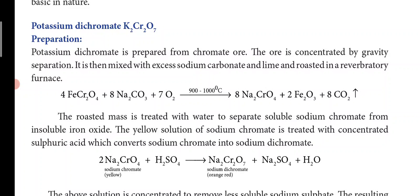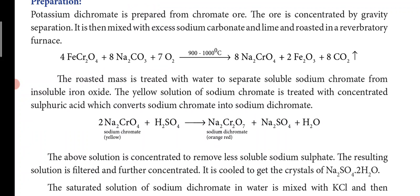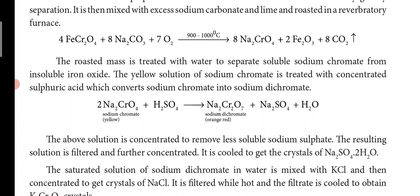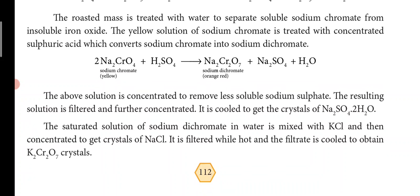The chromate ore is heated in the reverberatory furnace at around 900 to 1000 degrees Celsius, yielding sodium chromate, iron oxide, and carbon dioxide gas. The roasted mass is treated with water to separate soluble sodium chromate from insoluble iron oxide. The yellow solution of sodium chromate is then treated with concentrated sulfuric acid, which converts it into sodium dichromate.